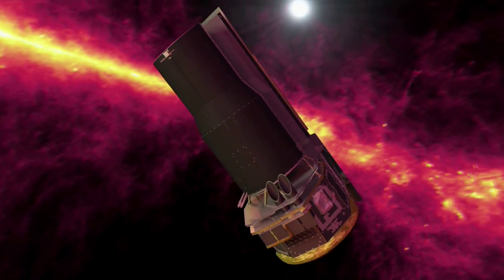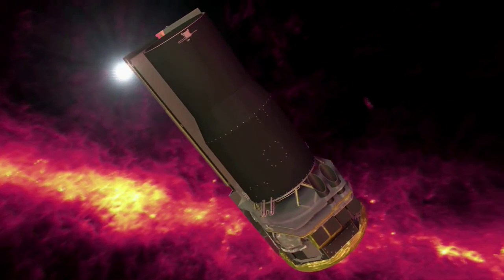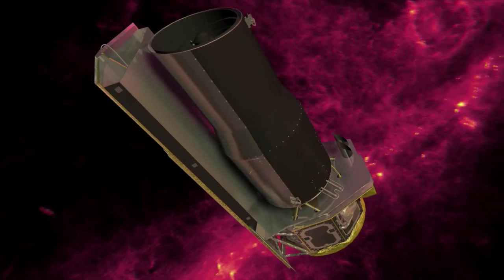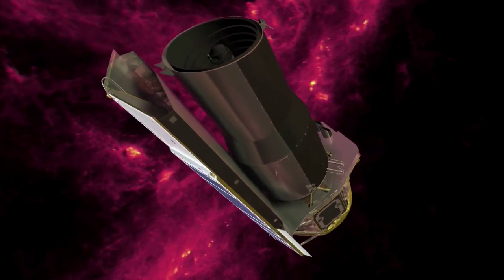Could there be other worlds out there with even wilder weather than we see in our solar system? Astronomers using NASA's Spitzer Space Telescope think they've found two that are all that and more.